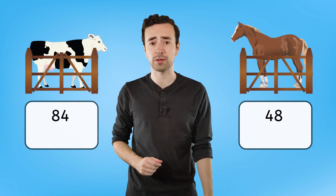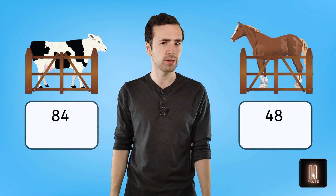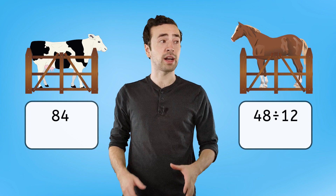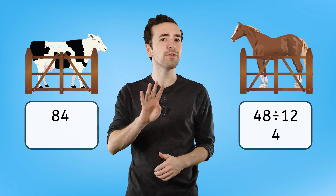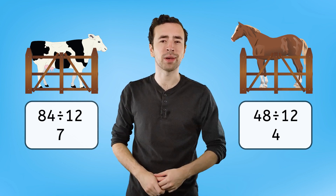Hold your horses, you can't go yet! We figured out that we would need 12 animals in each pen, but we still have to let the other farmer know how many horse pens and cow pens they need. There's 48 horses and 84 cows. Can you help me solve this? Pause here to crunch the numbers. 48 horses divided by 12 per pen is 4 horse pens. 84 cows divided by 12 per pen is 7 cow pens.